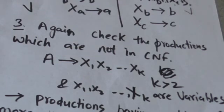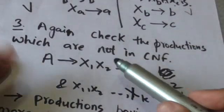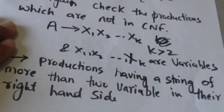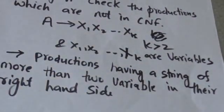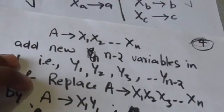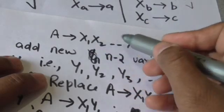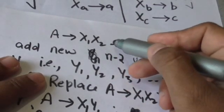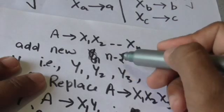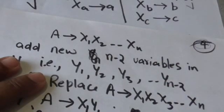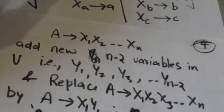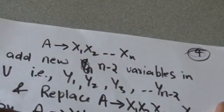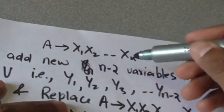After performing this step, we again check the productions which are not in CNF. The productions which are not in CNF after this second step will have a string of more than two variables on their right-hand side.